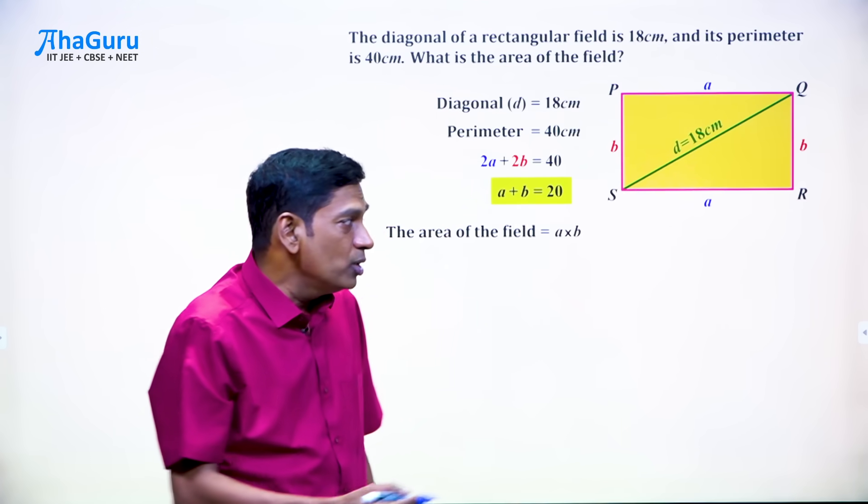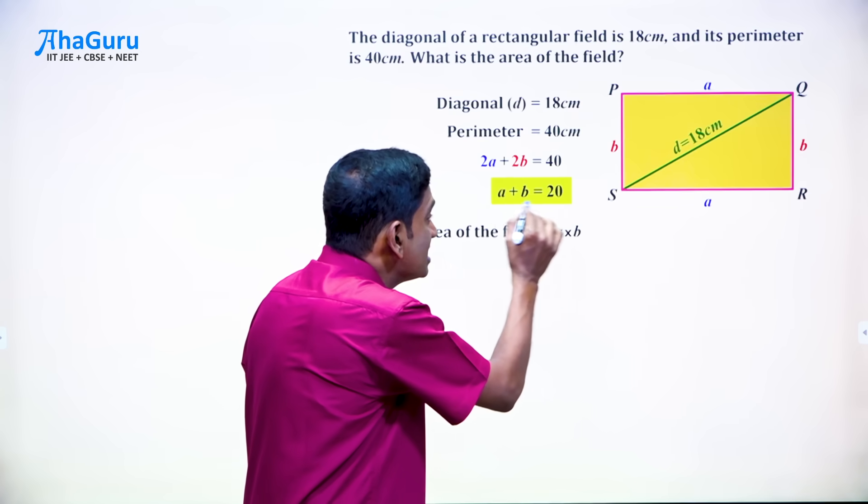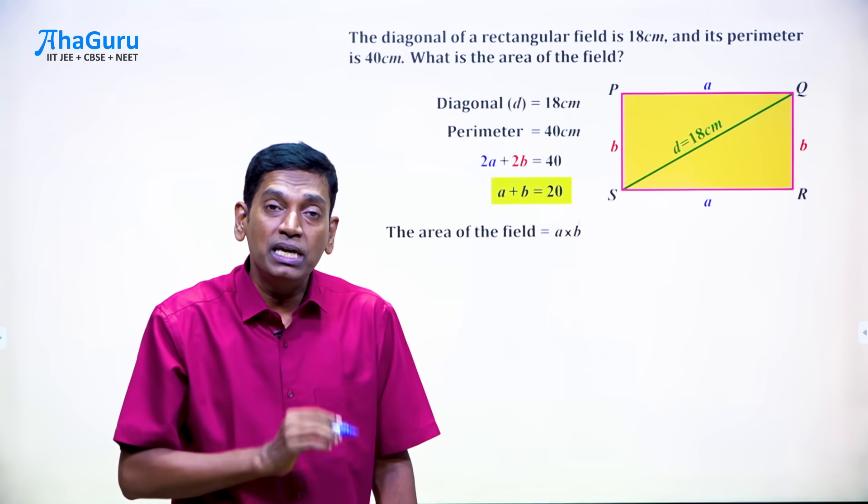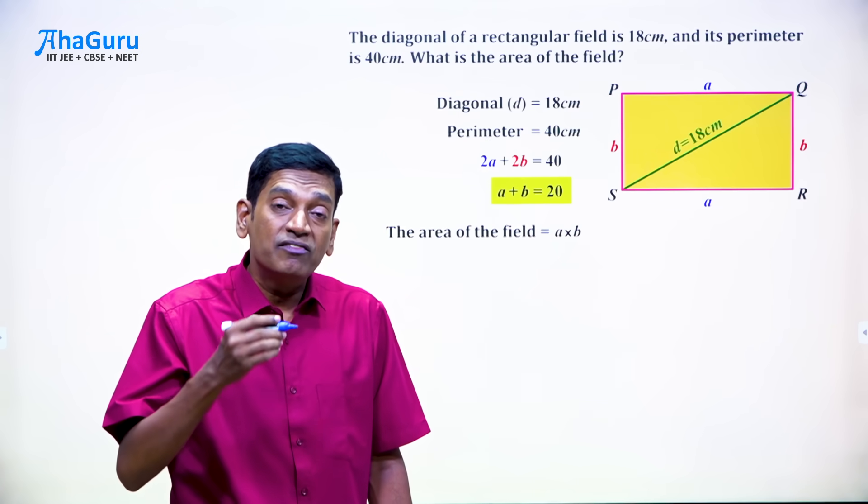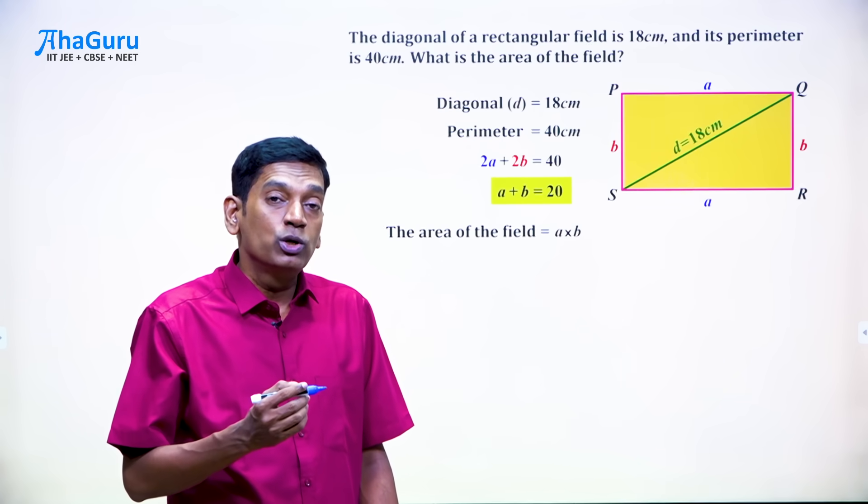And if you know A and B, you will get the area. But do we know A and B? No, we only have the sum of A and B. How do we find the values of A and B? Well, that's not clear at all. So what do we do?